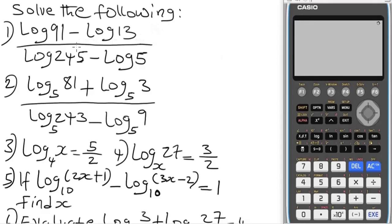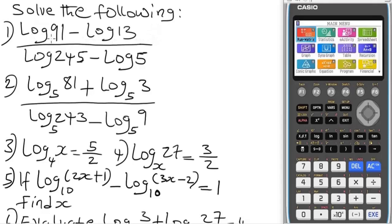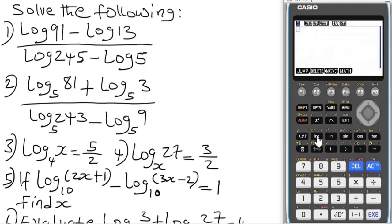Let's begin with question 1. It says, solve the following: log 91 minus log 13 over log 245 minus log 5. When the equation, the log is not having a specified base, just know that the base of that log is automatically base 10. We're going to make use of this log function and the fraction box.